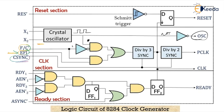By using the CSYNC signal, it allows synchronization among multiple 8284 clock generators. If you are using multiple processors, then you require multiple 8284 clock generators, and CSYNC provides synchronization between them. When using a single 8086 microprocessor, CSYNC is grounded. The generated output clock frequency in both cases will be one-third of the applied input frequency. The clock signal for peripheral devices such as the 8254 timer is generated by dividing the clock frequency by 2, giving the PCLK output.